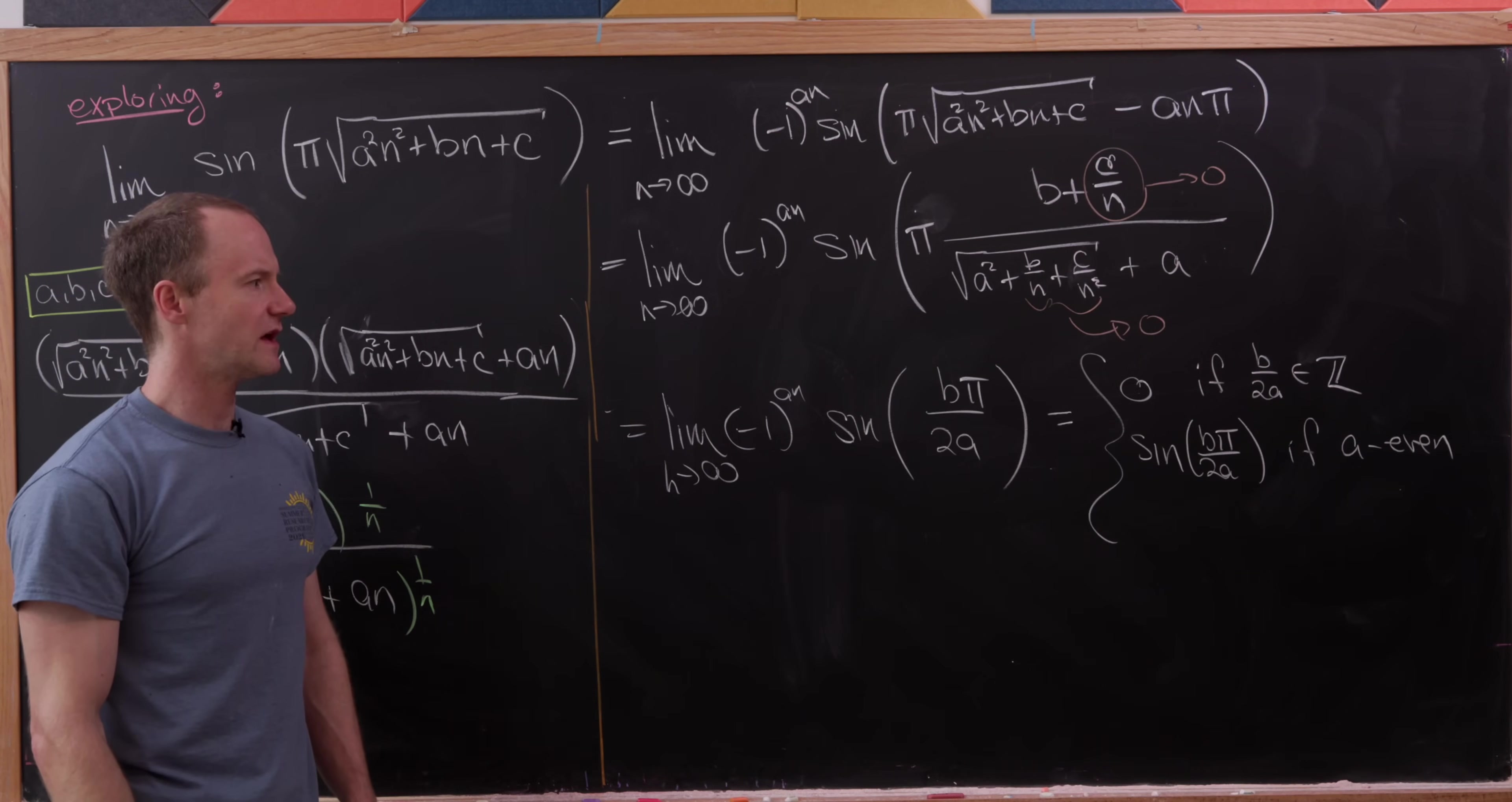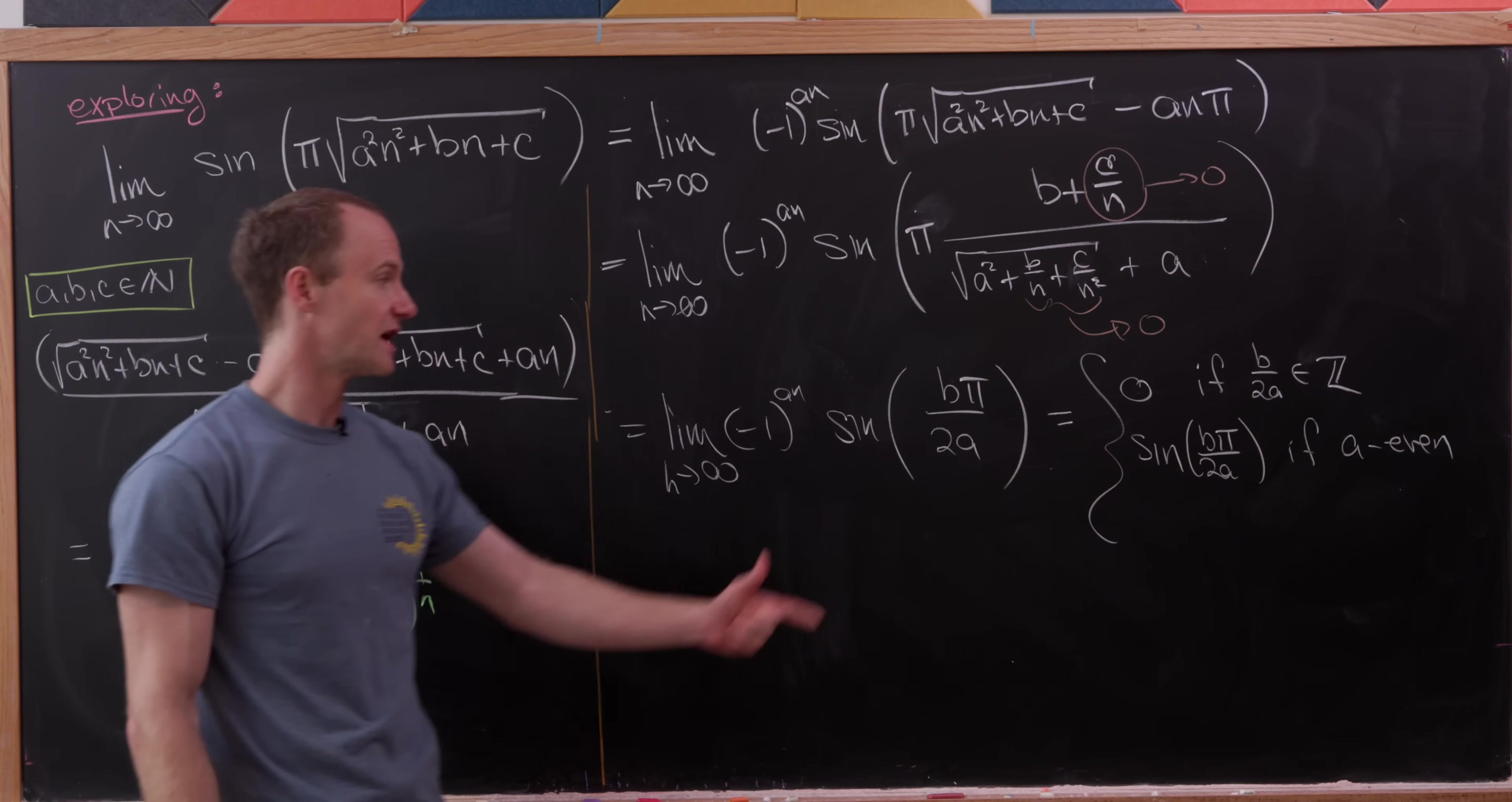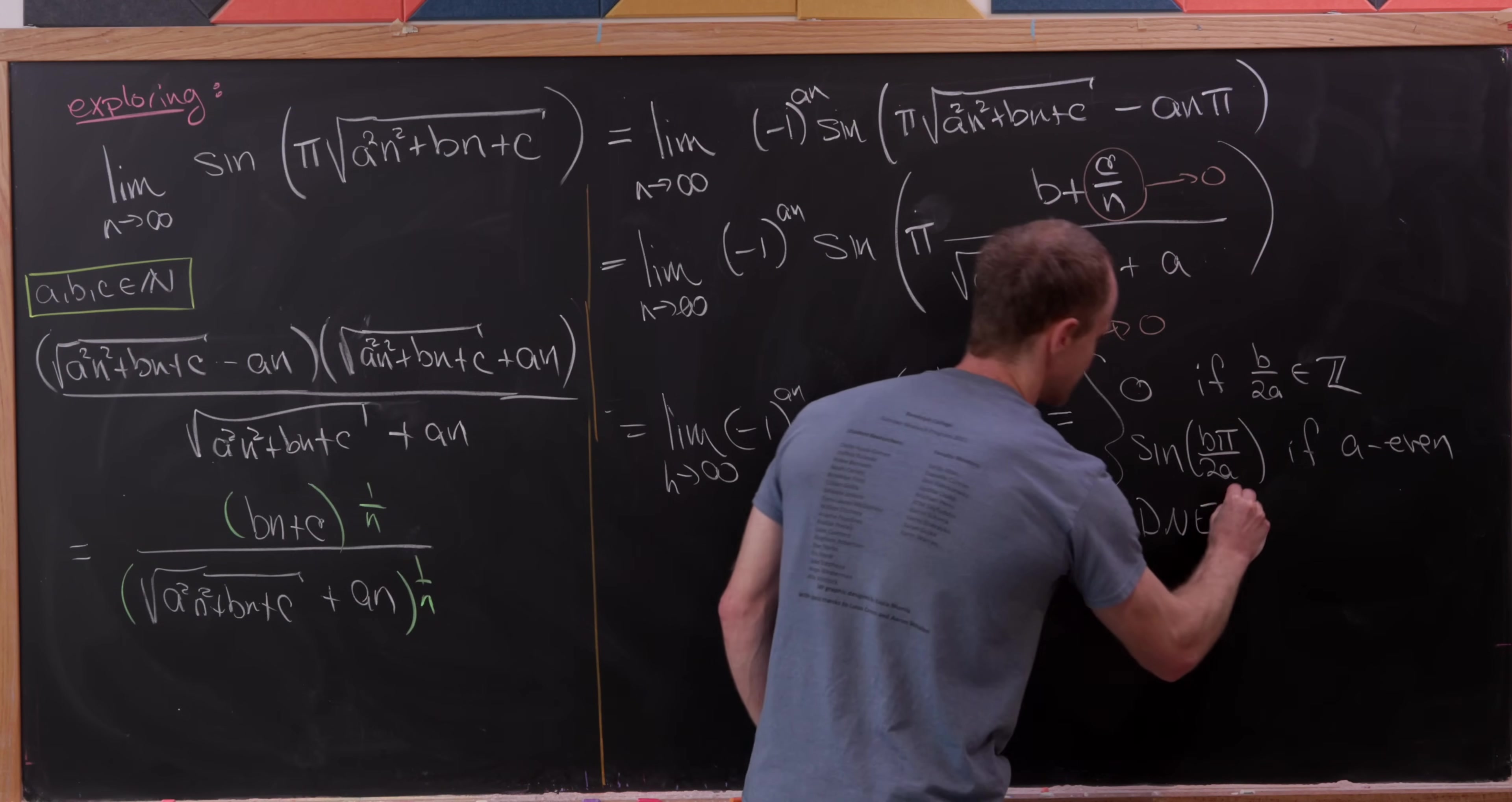But now if neither of those are satisfied, so if a is odd, then this (-1)^(an) is most definitely alternating between even and odd numbers as n gets larger and larger. And then this is fixed at some non-zero number. So that alternates between positive and negative, that non-zero number, meaning the limit does not exist.